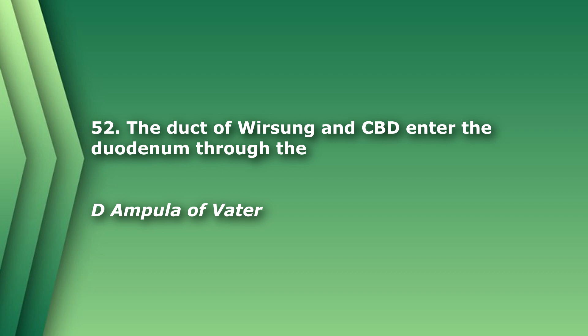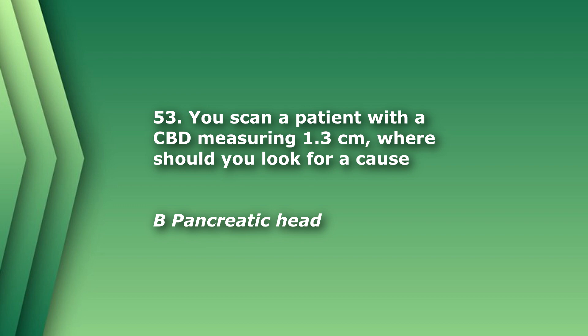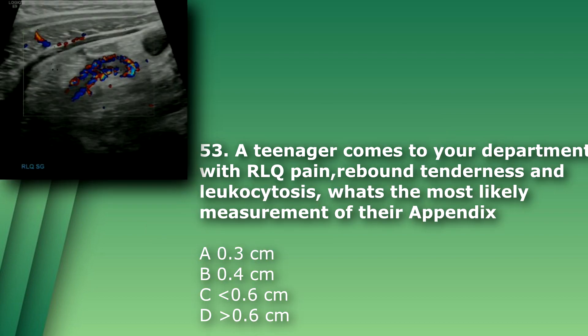Question 53: You scan a patient with a CBD measuring 1.3 centimeters — where should you look for a cause? A) spleen, B) pancreatic head, C) stomach, D) right kidney. The answer is B, pancreatic head. A dilated CBD can be due to choledocholithiasis, so you should examine the intra- and extra-hepatic CBD as well as the CBD at the head of the pancreas.